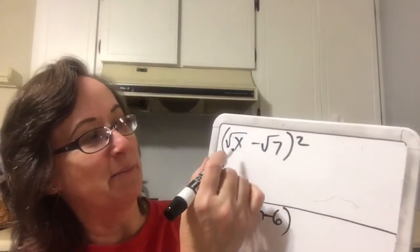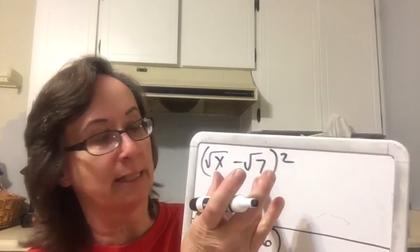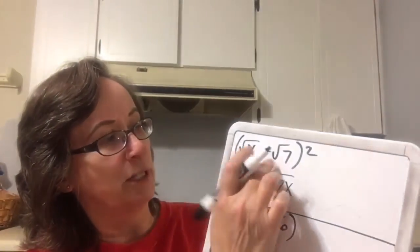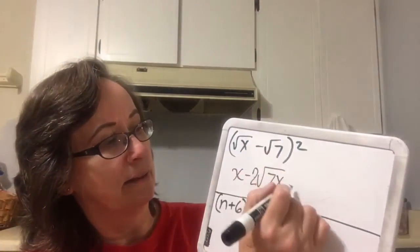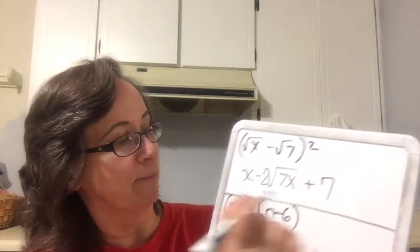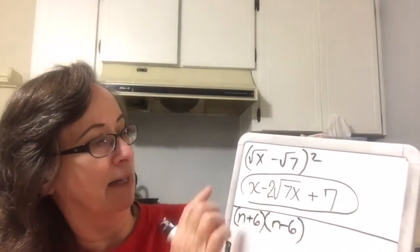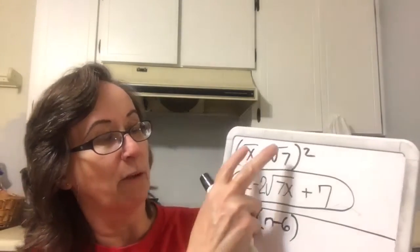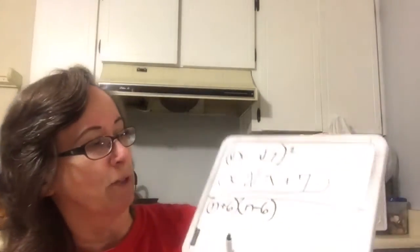We're going to do the same thing here. The first term squared is just x. The product — what's inside the radical can multiply with what's inside the radical — is negative square root of 7x, and that's doubled. Then the last is plus 7. There's nothing I can do to change that — that's as simple as I can get it. So the first term squared, the product of the two terms doubled, the last one squared — that was a binomial squared, not a FOIL.